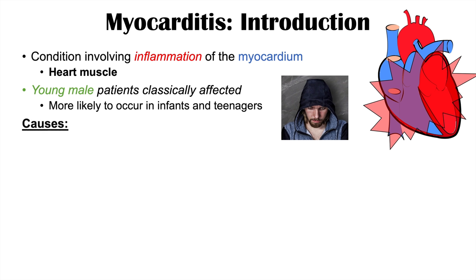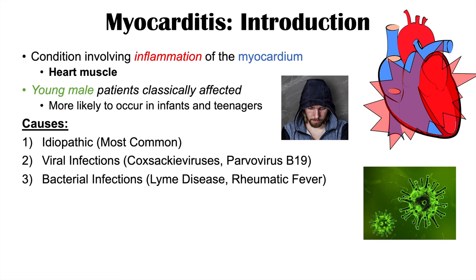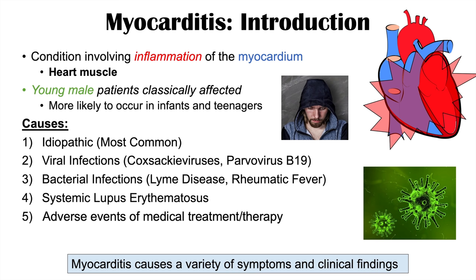There are a variety of causes of myocarditis. Most of them are idiopathic, meaning that the cause is not entirely known. However, some known causes include viral infections with Coxsackie viruses or parvovirus B19, bacterial infections like Lyme disease and rheumatic fever, autoimmune conditions like systemic lupus erythematosus, and myocarditis can also be a side effect from a medical treatment or therapy — for example, sulfonamide antibiotics can cause myocarditis in rare cases.